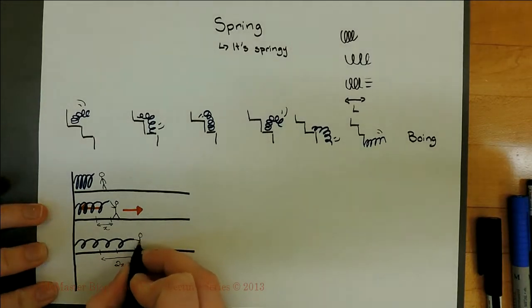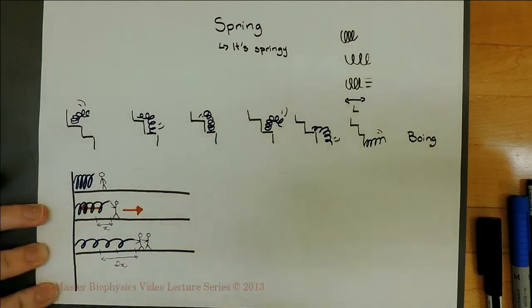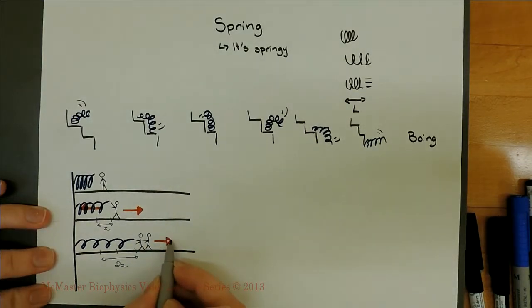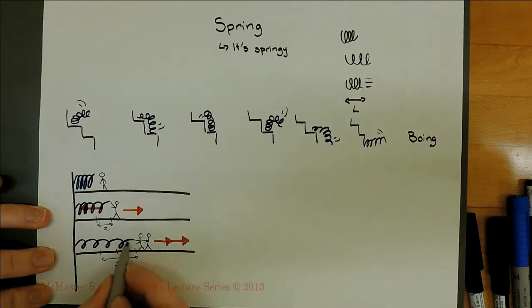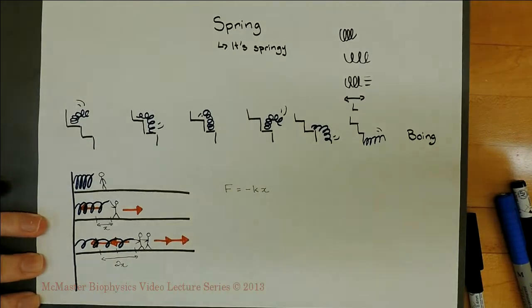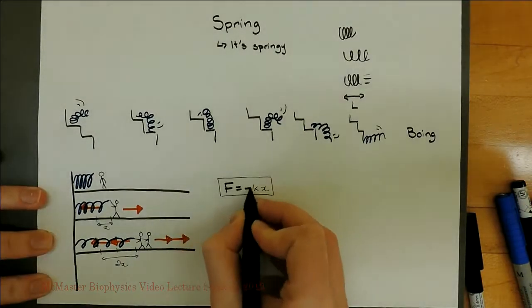When displacement is doubled, the force exerted by the spring also doubles. So the force increases linearly with displacement, but in the opposite direction. Because of this, we have a single power of x and a negative constant.